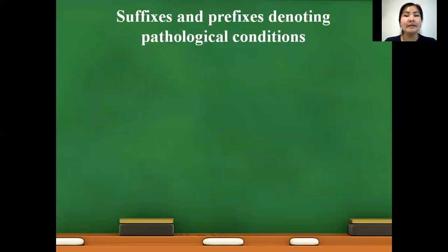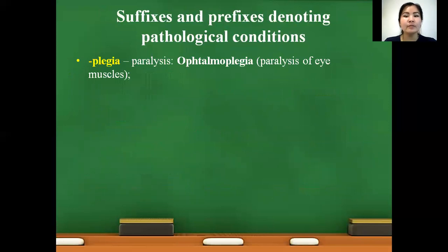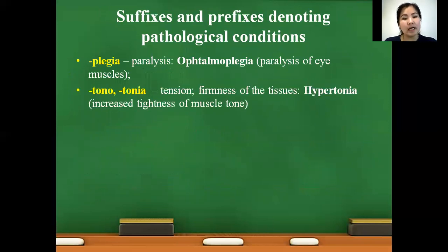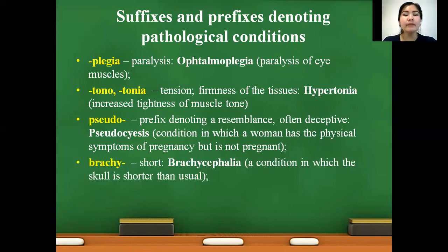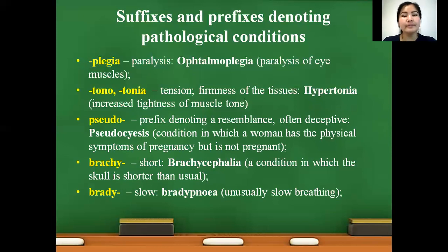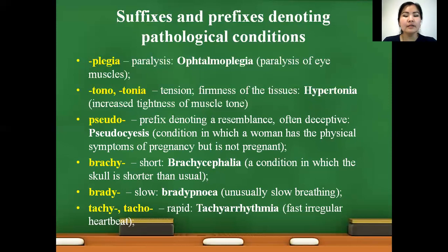Sclerosis — hardness, hardening. Example: osteosclerosis — abnormal hardening of bone and elevation of bone density. Malacia — softening. Example: encephalomalacia — localized softening of brain substance due to hemorrhage or inflammation. Megalia, megalo — two meanings: first, enlargement of an organ, like cardiomegalia — abnormal enlargement of the heart; second, big, as in megalomania — psychiatric disorder in which a person believes they are very powerful and important. Penia — deficiency of blood cells. Example: erythropenia — deficiency of red blood cells. Rrhea — discharge of any fluid from an organ. Example: pyorrhea — inflammation of the gums characterized by discharge of pus and loosening of teeth. Rhagia — blood discharge, bleeding, uncontrolled loss of blood. Example: haemorrhagia — large flow of blood from damaged blood vessels. Suffixes and prefixes denoting pathological conditions: plegia — paralysis. Example: ophthalmoplegia — paralysis of eye muscles. Tonia — tension, firmness of tissues. Example: hypertonia — increased tightness of muscle tone. Pseudo — denoting resemblance, often deceptive. Example: pseudocyesis — condition in which a woman has physical symptoms of pregnancy but is not pregnant; means false pregnancy. Brachy — short. Example: brachycephalia — condition in which the skull is shorter than usual. Brady — slow. Example: bradypnea — unusually slow breathing. Tachy — rapid. Example: tachyarrhythmia — fast, irregular heartbeat.